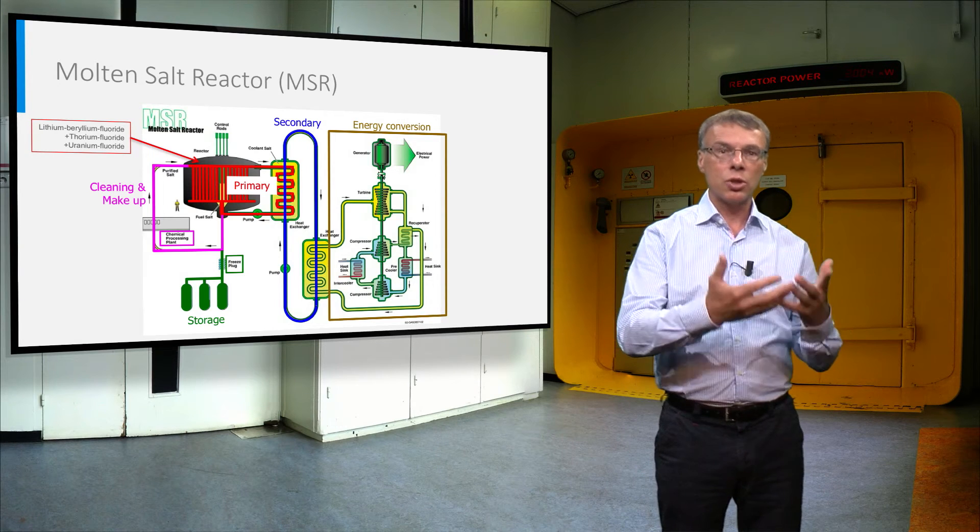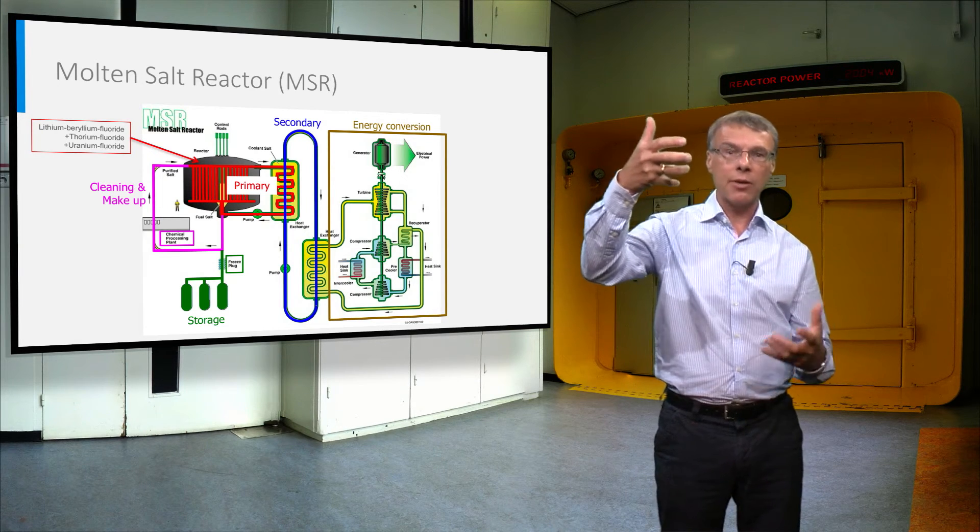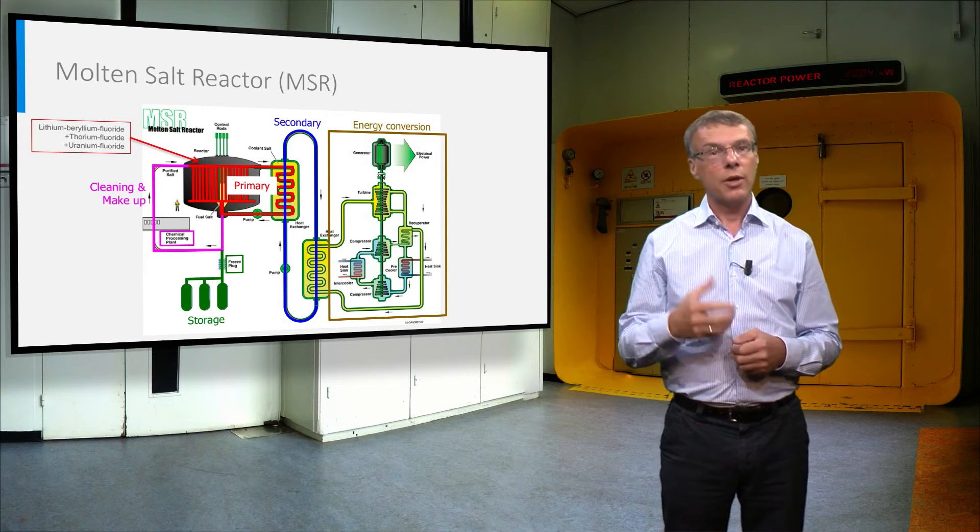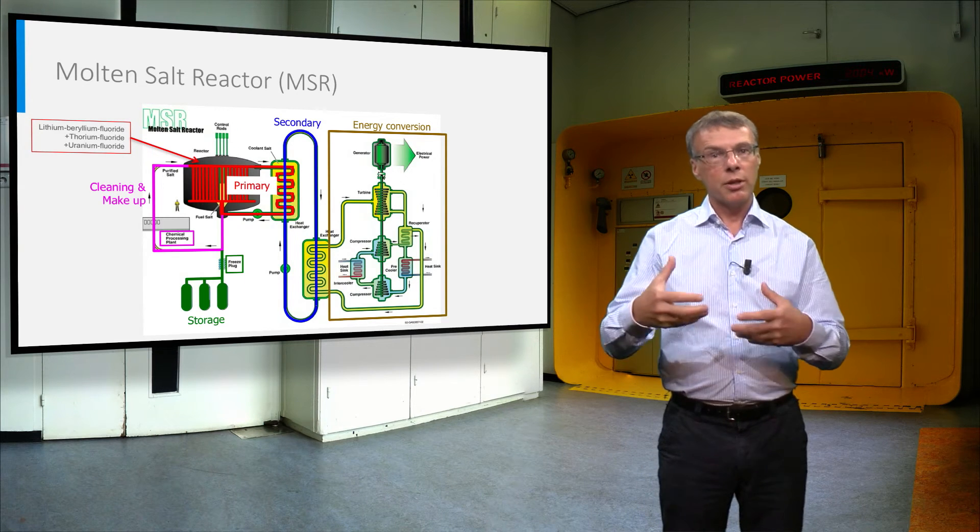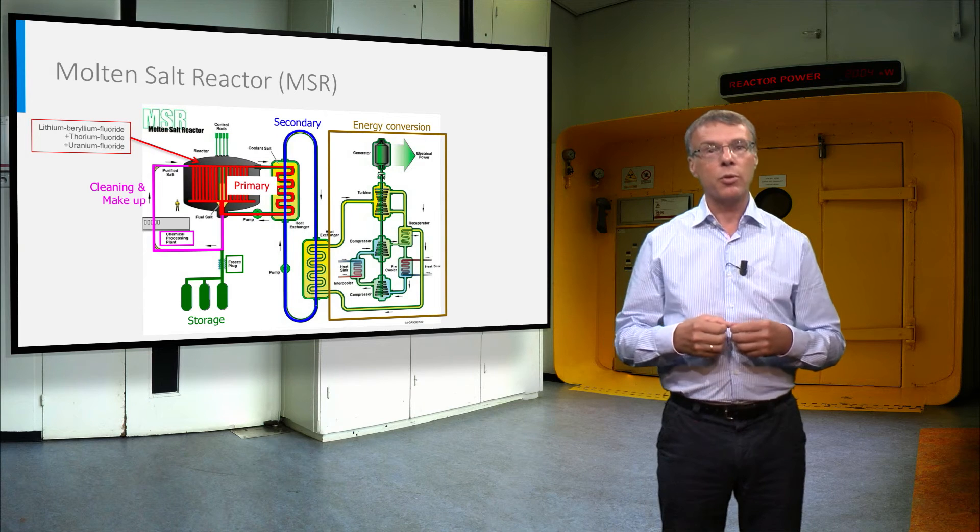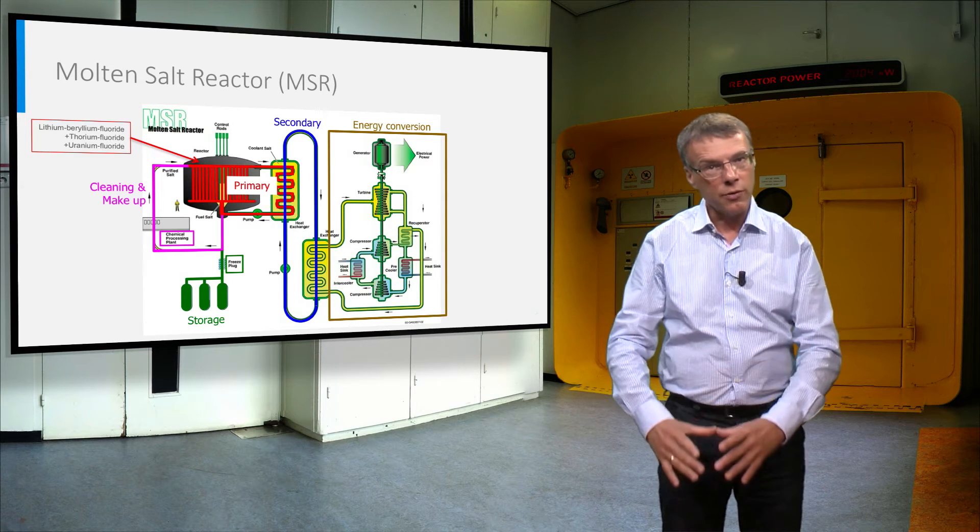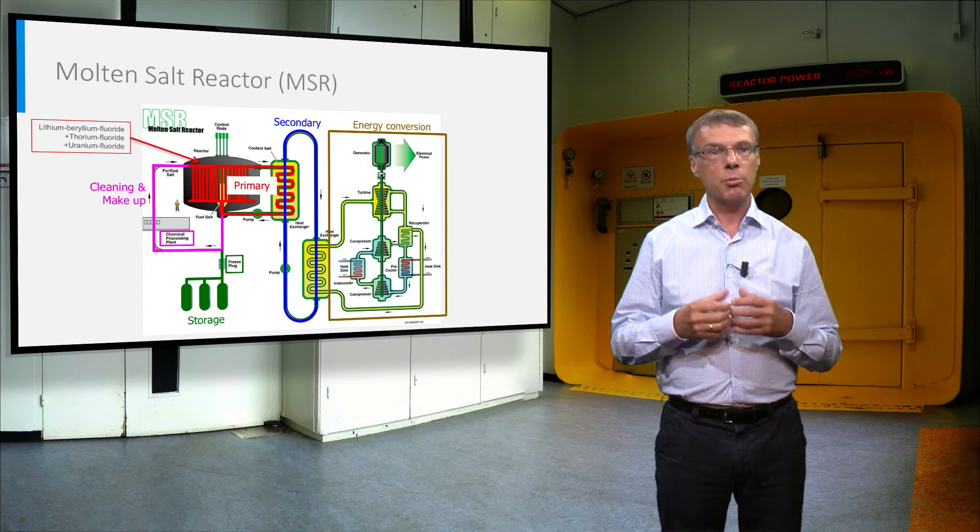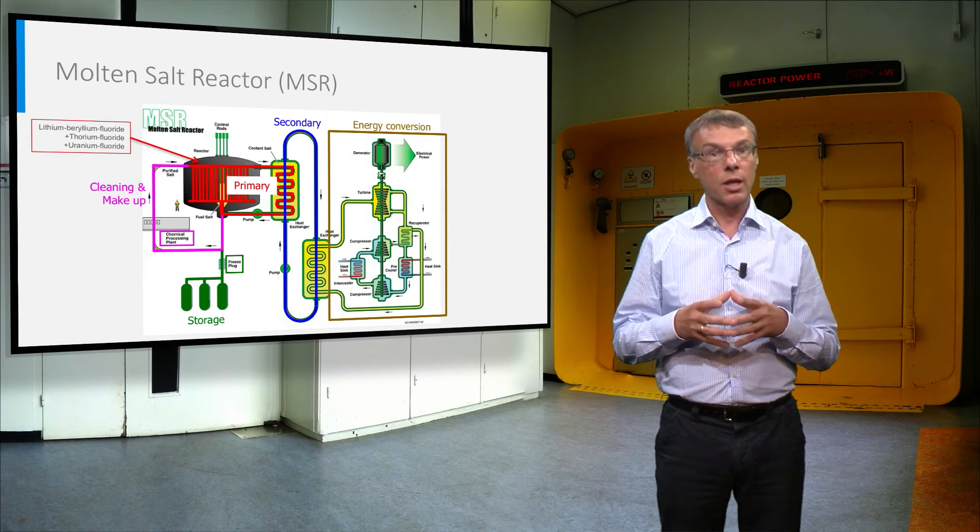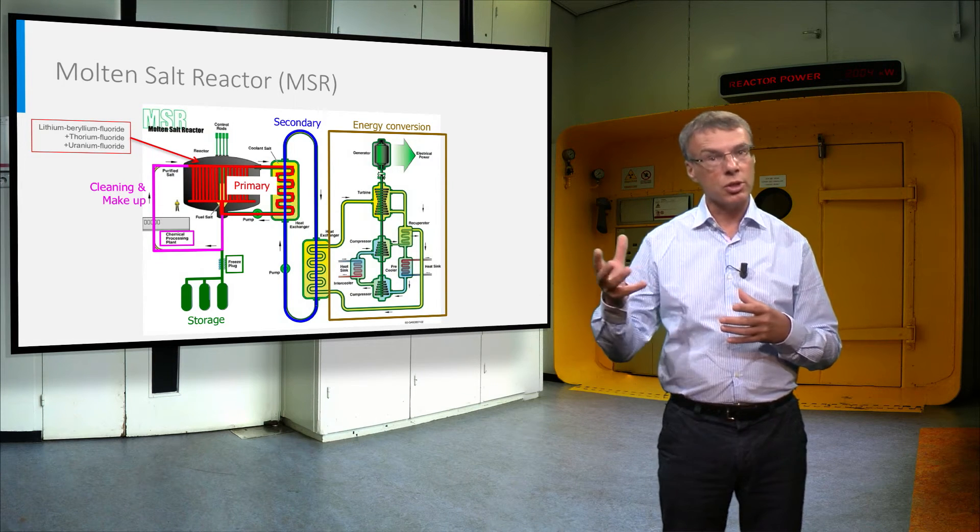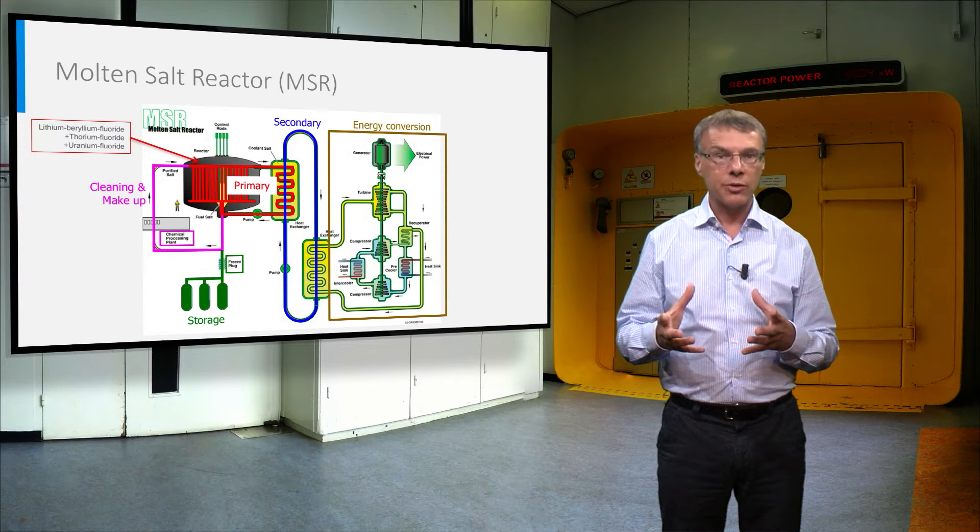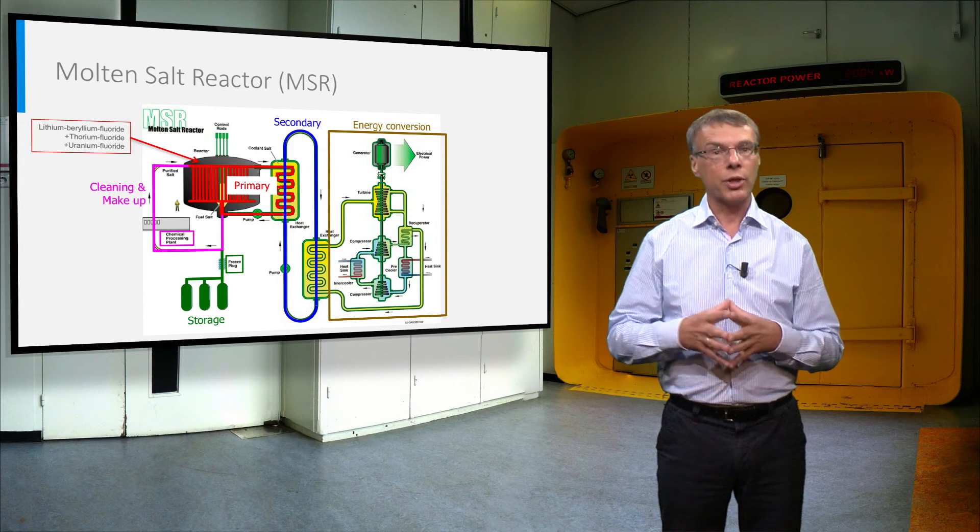In a molten salt reactor, the salt is allowed to freely expand and flow. If the salt heats up too much, the freeze plug in the green pipe will melt and the salt will freely flow in the safe storage tanks beneath the reactor core. These can be cooled with water via natural convection or via another passive cooling mechanism to avoid overheating.